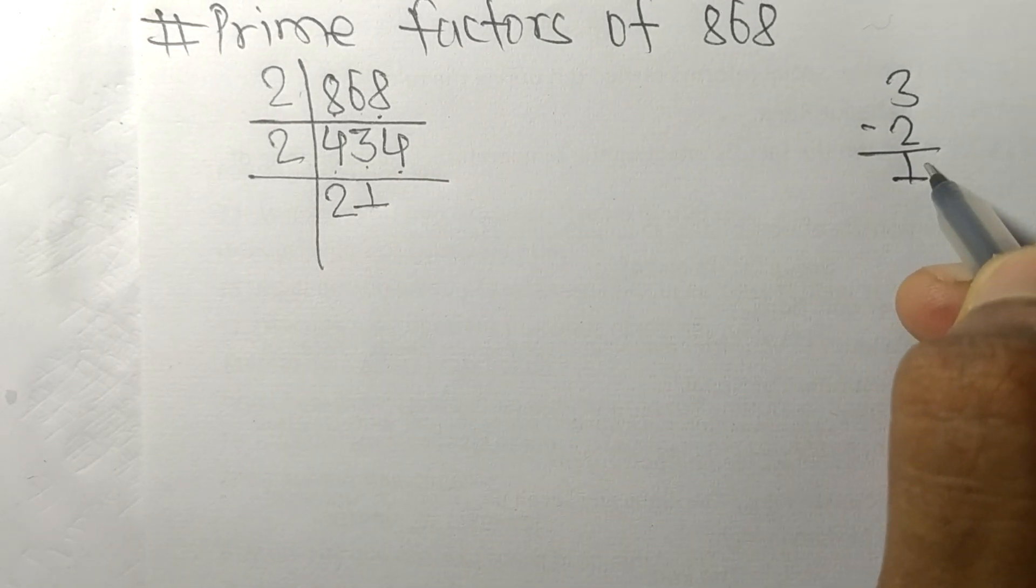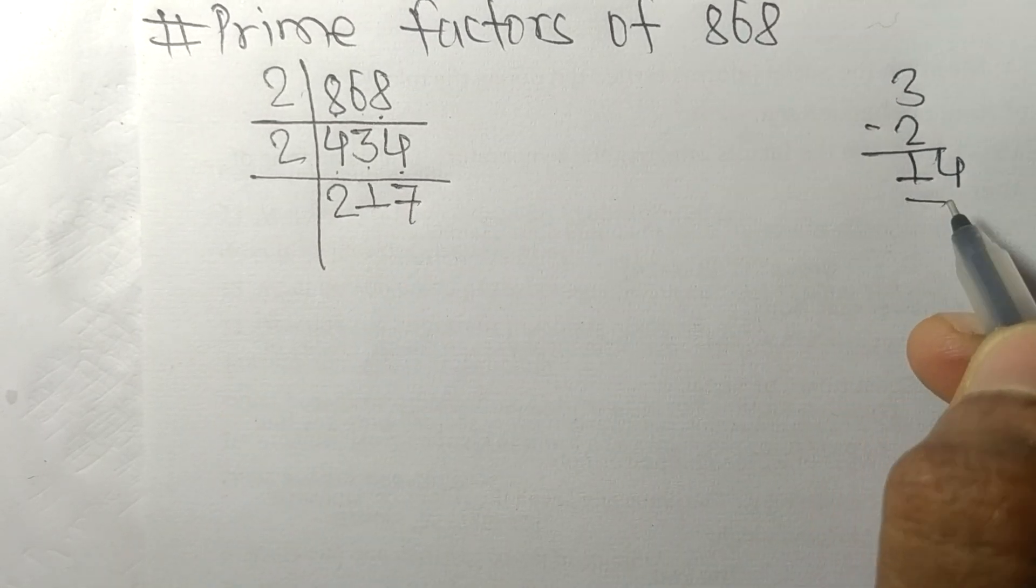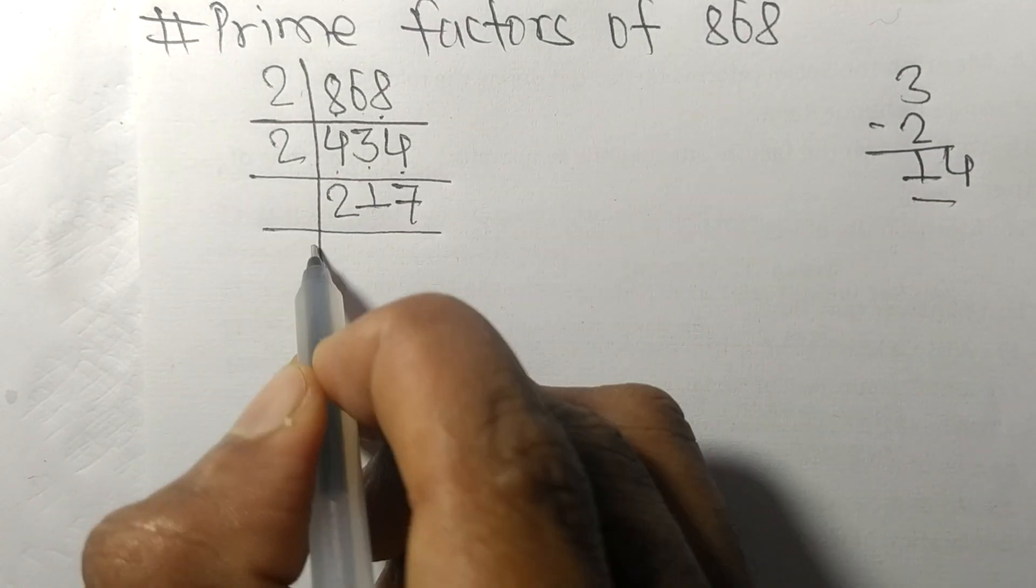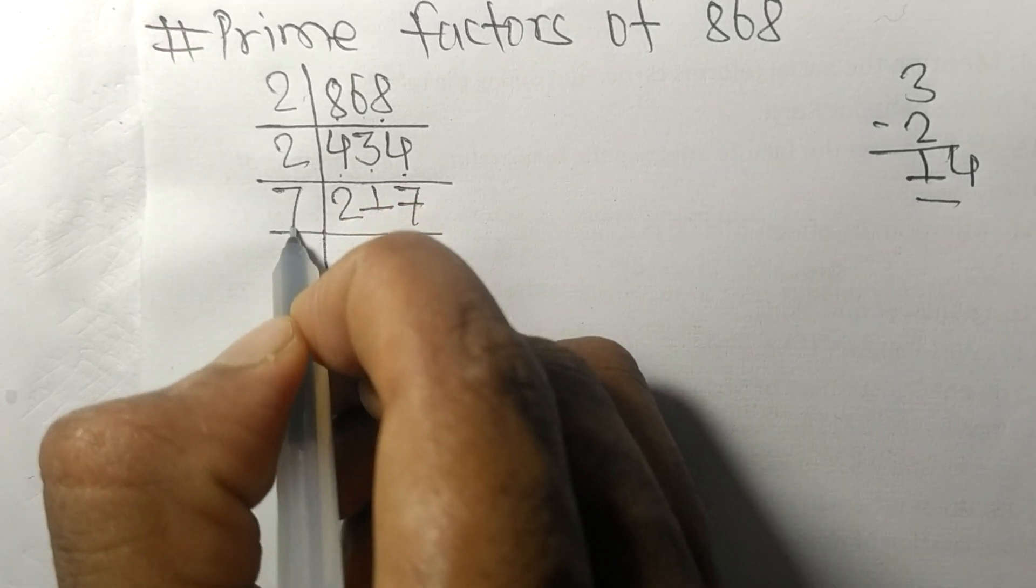And this 4... 14. 2 times 7 means 14. So now we got 217 which is exactly divisible by 7.